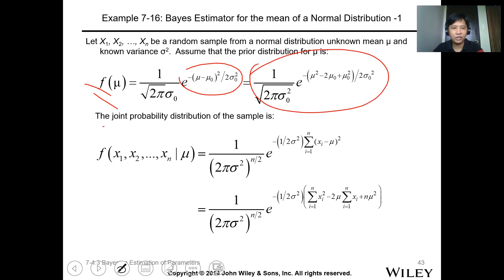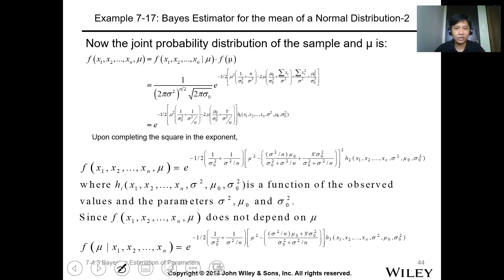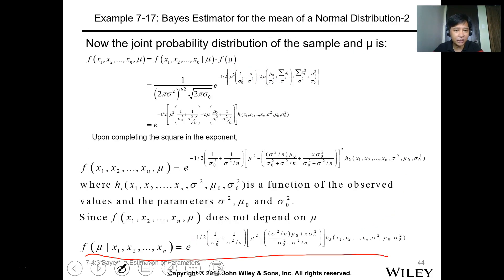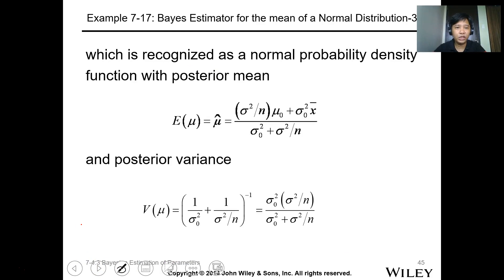Here's an example using normal distribution. We have a function of mu expressed as mu. This is the joint probability distribution, or the function given mu. The calculation of the joint probability distribution to get f of x and mu. This is your computation. Then you just divide to get this expression. Therefore, we recognize this as a normal probability density function. The expected value of mu, or mu hat, is this expression, and the posterior variance is just the variance of mu.